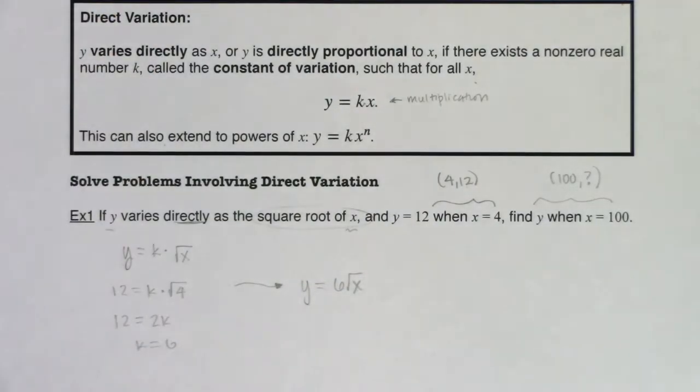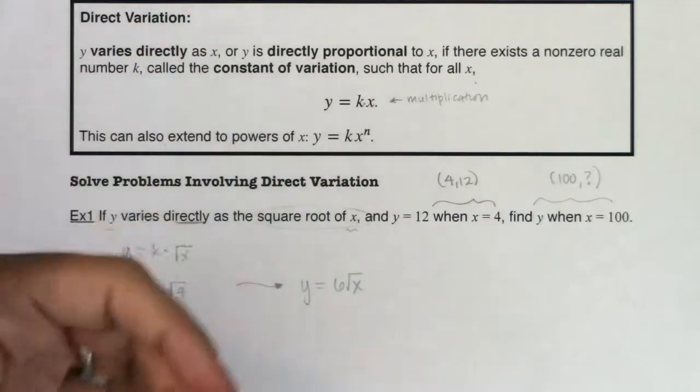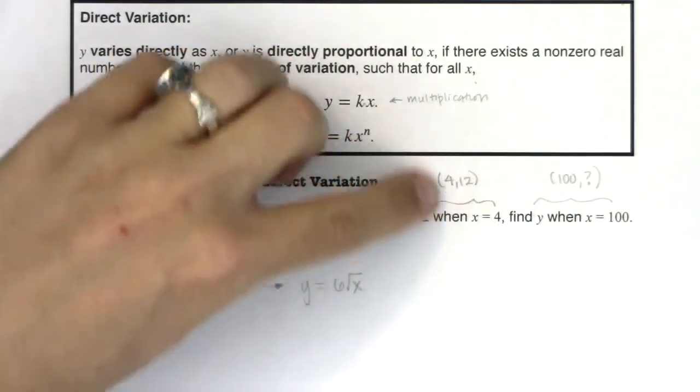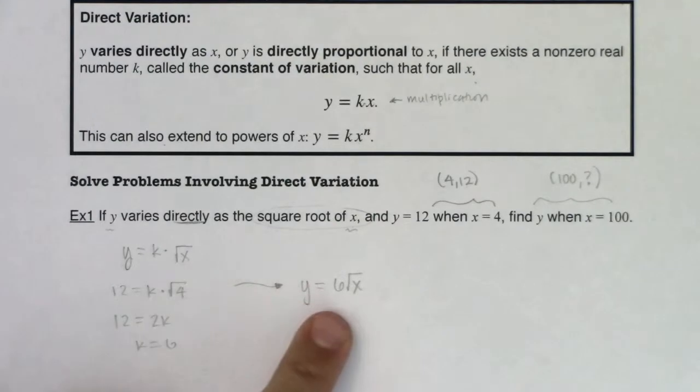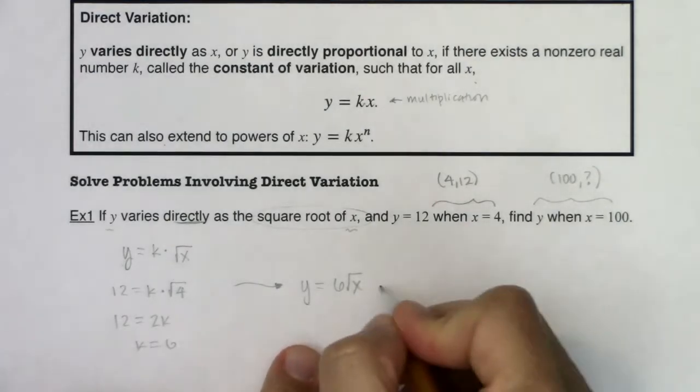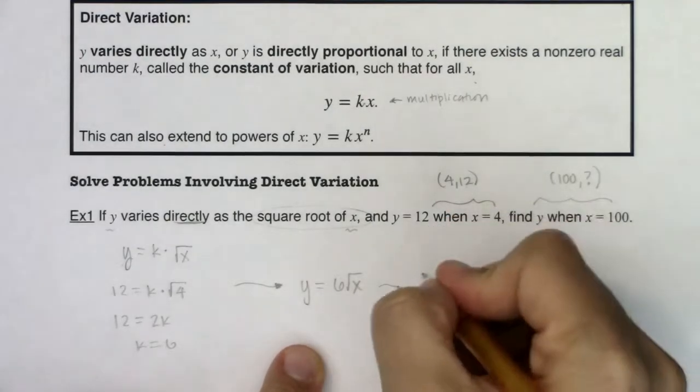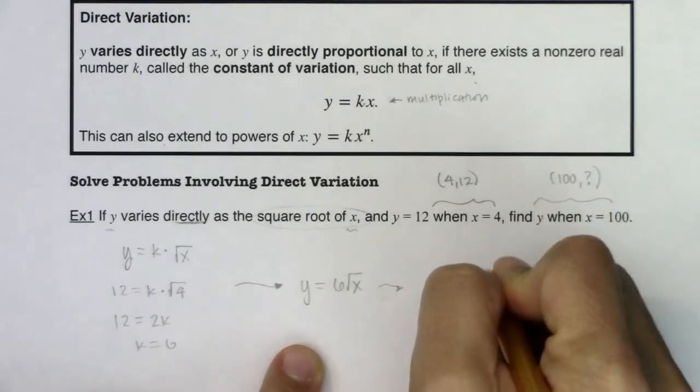So as you start to progress through these problems, start with your variation equation, whether it's direct, inverse, or joint. Take your complete ordered pair, or potentially ordered triple when we get into joint variation. But take that complete ordered pair and solve for your constant of proportionality. And then you get your equation. That's your variation equation. And now we can do it. When x is 100, what is y? Well, I'm going to just plug this in. So if I want to solve for this, I will say, well, for this ordered pair, I would have 6 times the square root of 100.